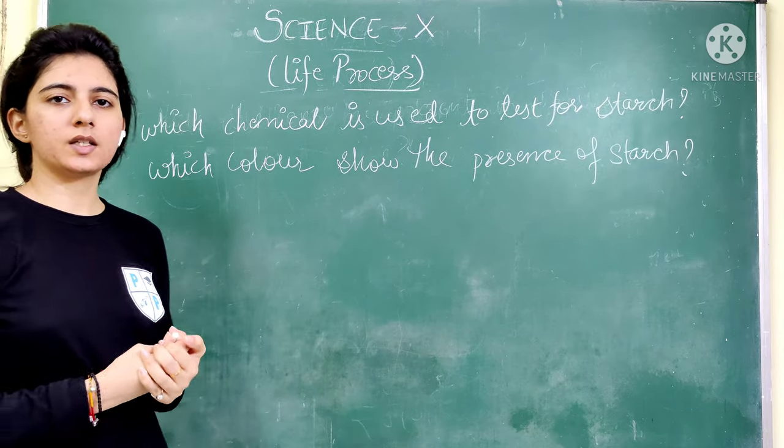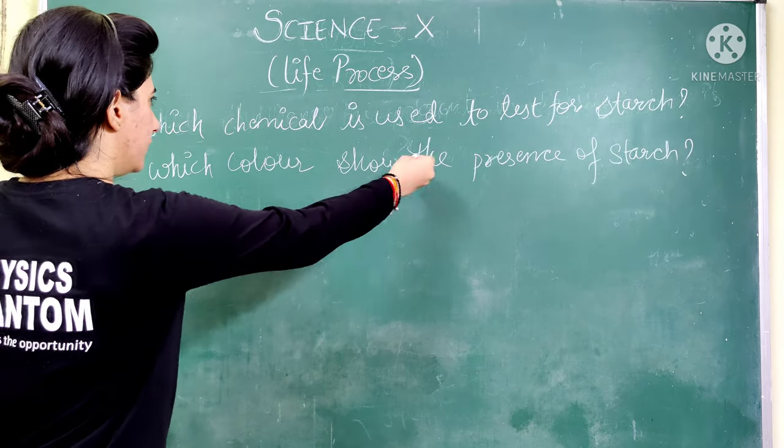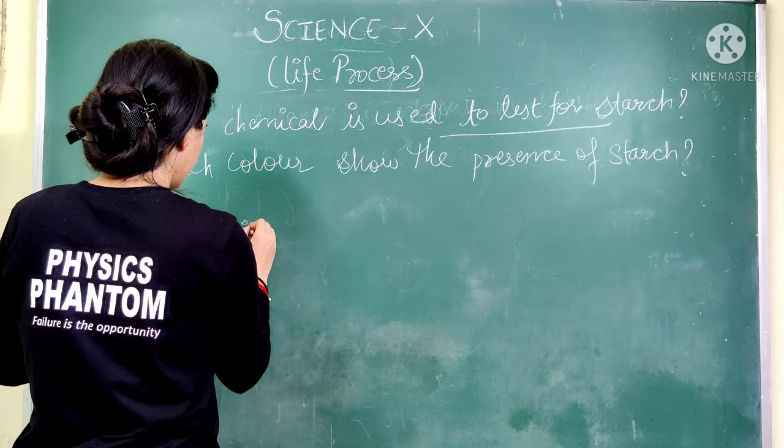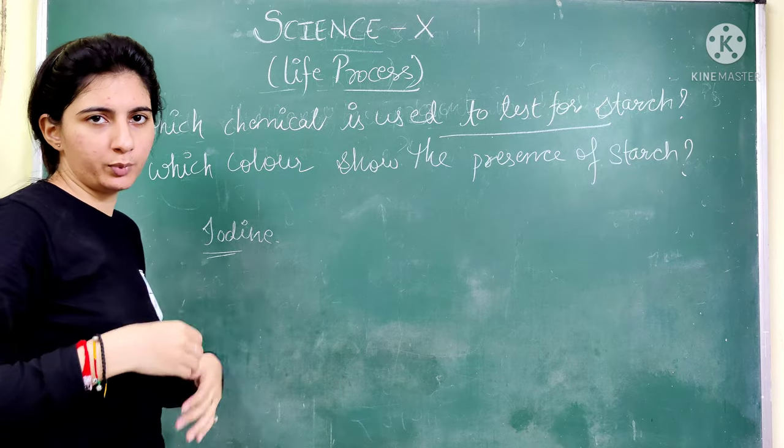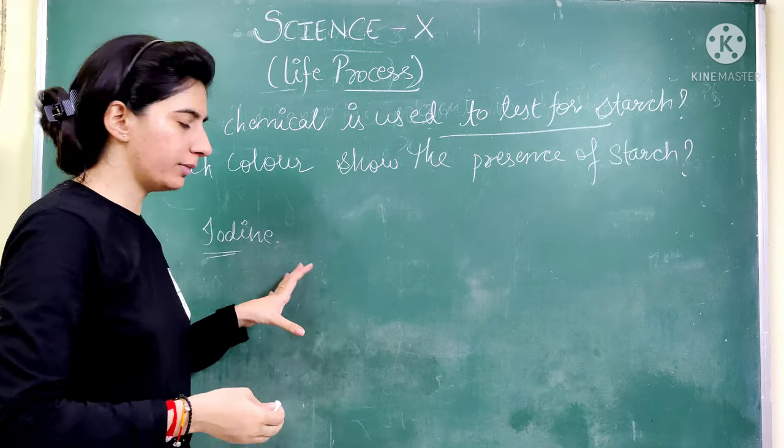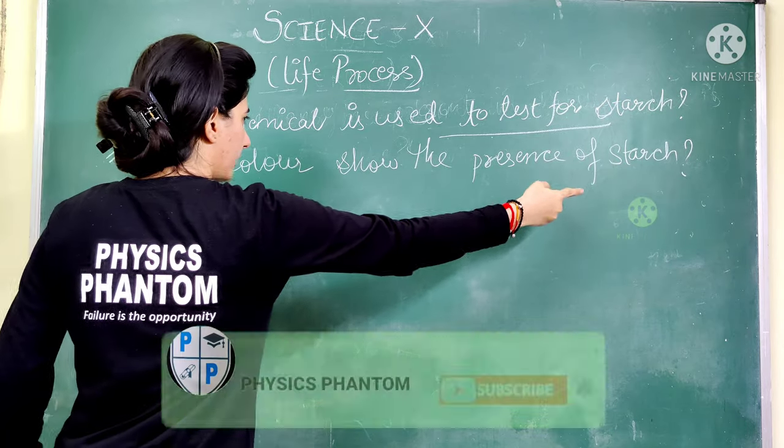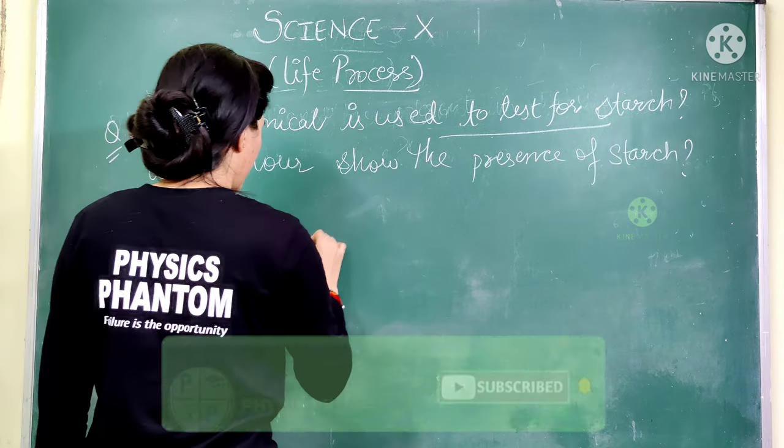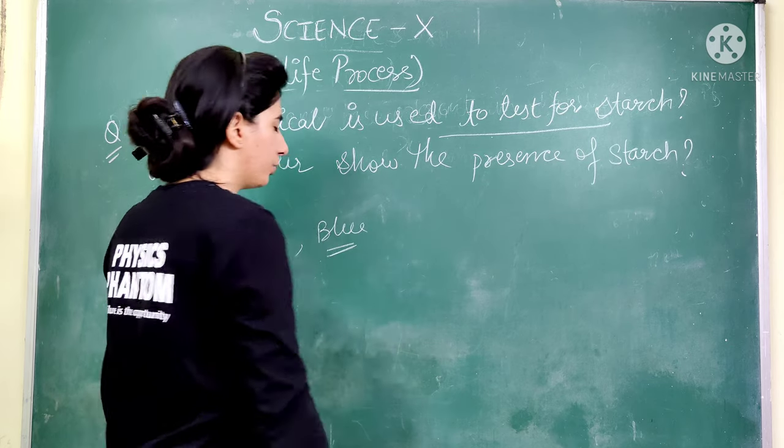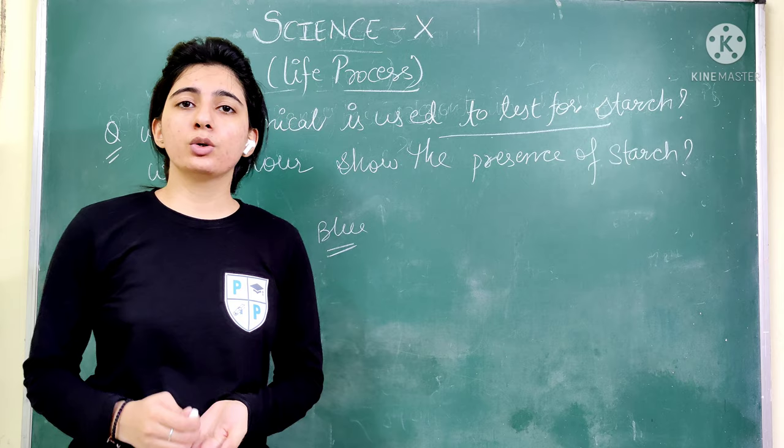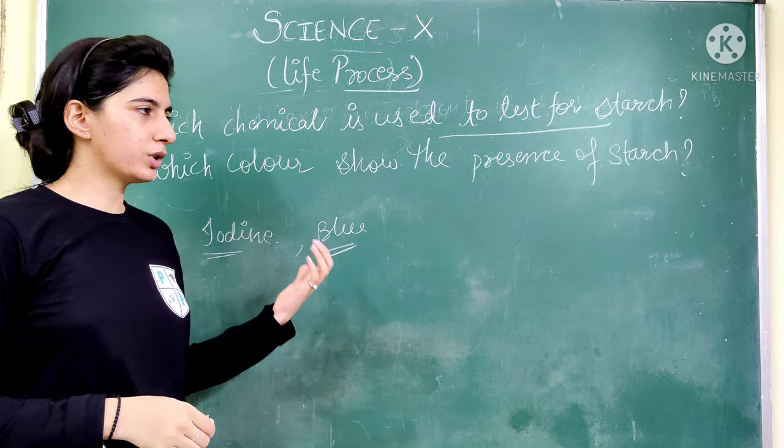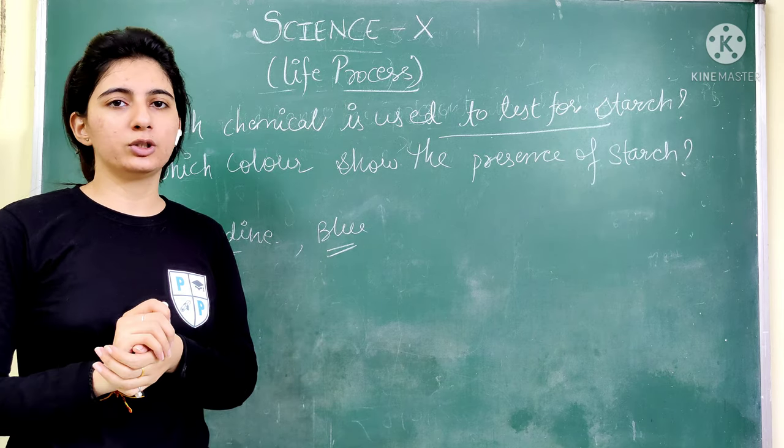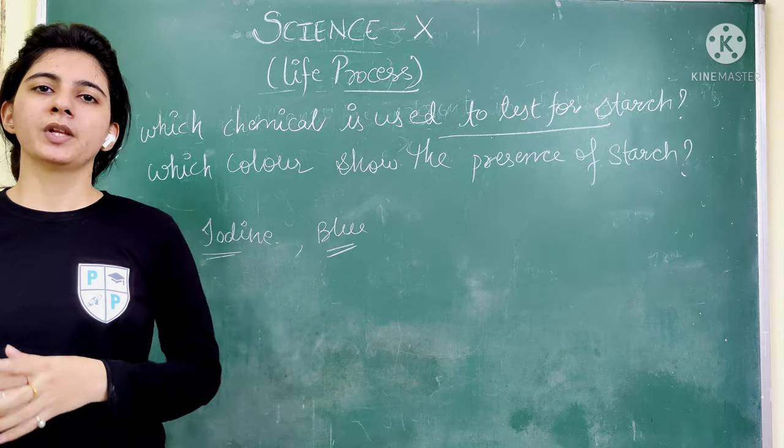Which chemical is used to test for starch? The answer is iodine. We use iodine solution. What is iodine solution? It's a mixed solution of potassium iodide and iodine water. Now the question is: which color shows the presence of starch? If the solution turns blue color, then you know that it shows the presence of starch. These are important questions in the life processes chapter which can come as one mark questions, short answers, or conceptual problems. If this video is useful, please like this video and subscribe to our channel. Thank you so much.